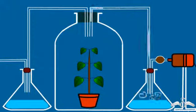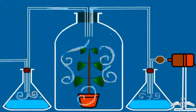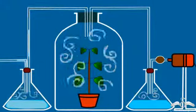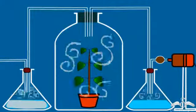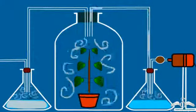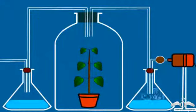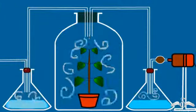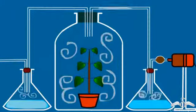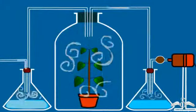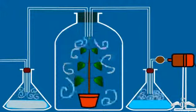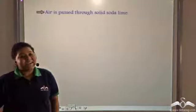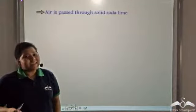So what have we done? We supplied oxygen-rich and carbon dioxide-free air to a plant. Because of oxygen, the plant is able to respire. During respiration, the plant gives out carbon dioxide, which is confirmed as the lime water turns milky.